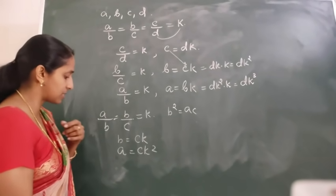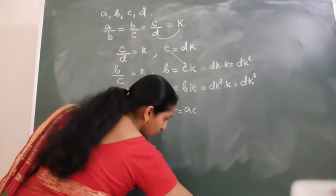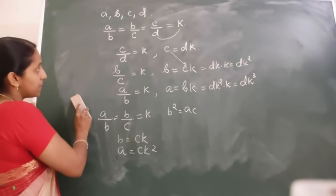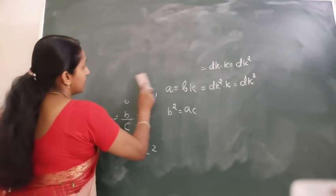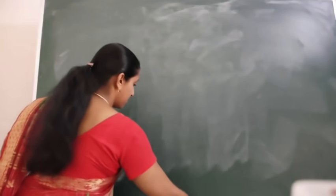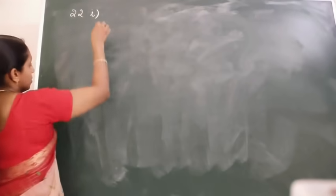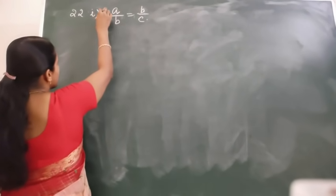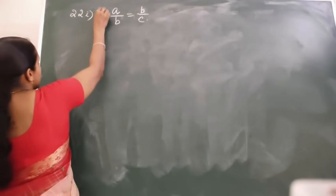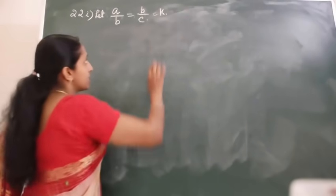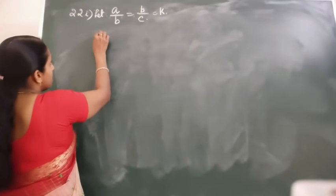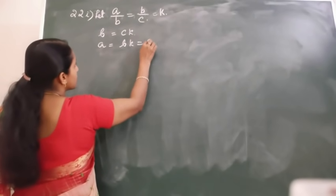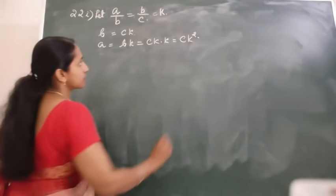We are going to see continued proportion questions. Take out question number 22. There it is given A, B, C are in continued proportion. A, B, C are in continued proportion means A upon B equal to B upon C. So let A upon B equal to B upon C equal to K. Start from the last: B equals CK. Then A equals BK, which equals CK times K, so A equals CK squared.